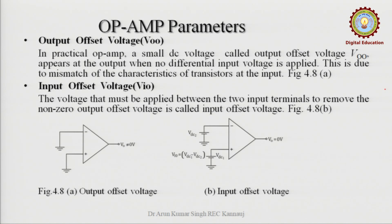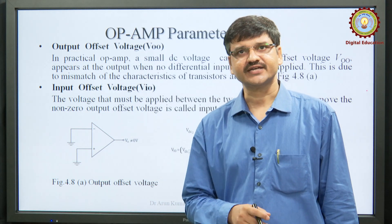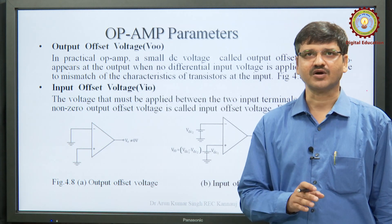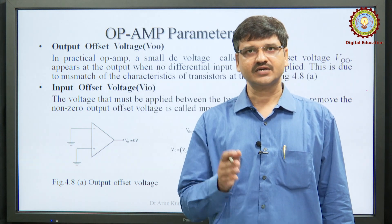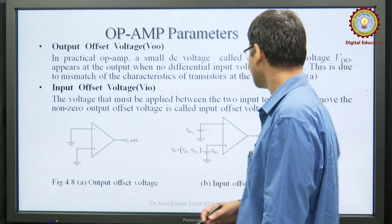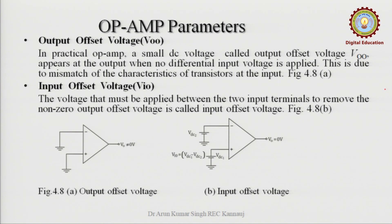Next is input offset voltage. In an ideal op-amp, the output offset voltage should be zero, but in all practical purposes we get some small value. To remove this output offset voltage, the voltage applied to the input terminals to nullify the output offset voltage is known as the input offset voltage. It is the voltage V_dc1 minus V_dc2 applied so that the output is null.